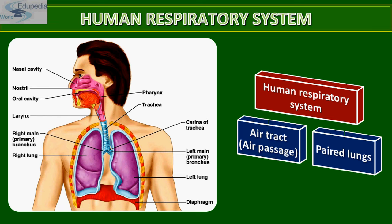The mechanism of breathing varies among different groups of animals, depending mainly on their habitats and level of organization. Lower invertebrates like sponges, coelenterates, and flatworms exchange oxygen with carbon dioxide by simple diffusion over their entire body surface.